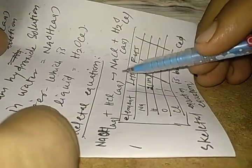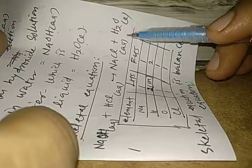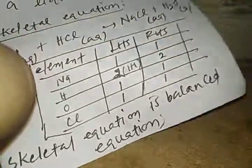So we can write the skeletal equation: NaOH aqueous plus HCl aqueous gives NaCl aqueous plus H2O liquid. We can see here the number of atoms.